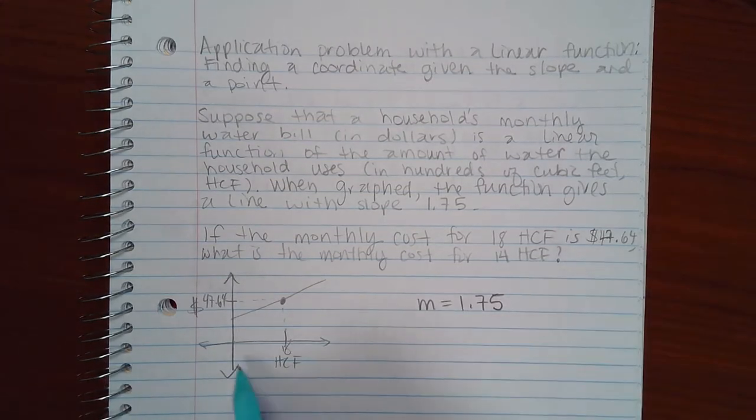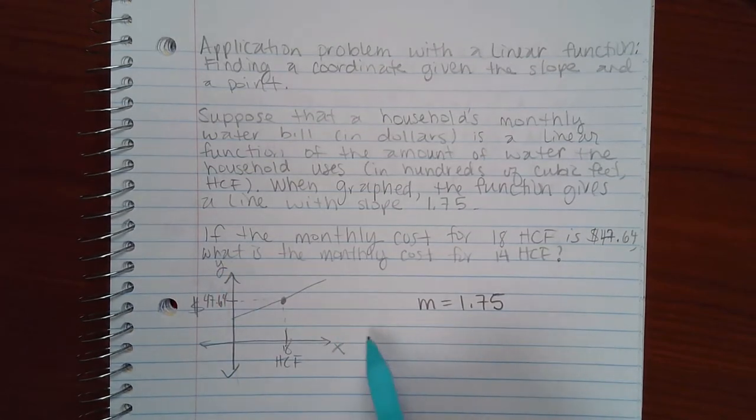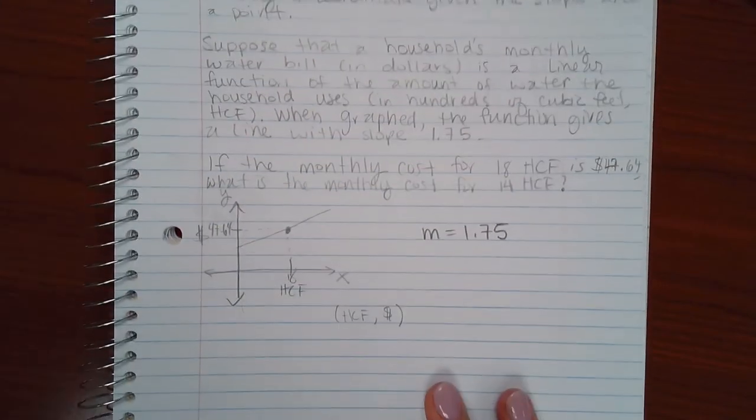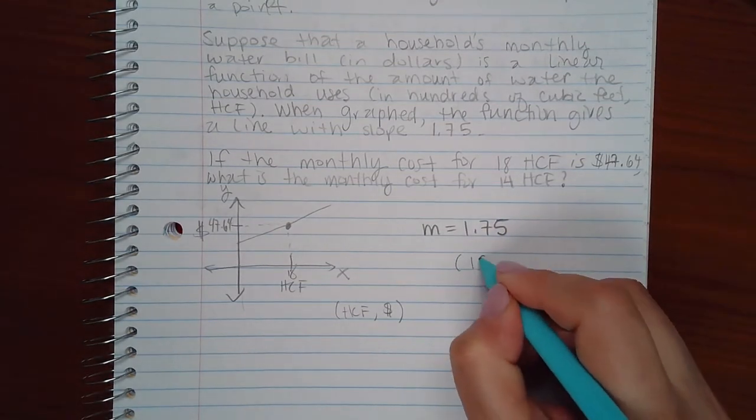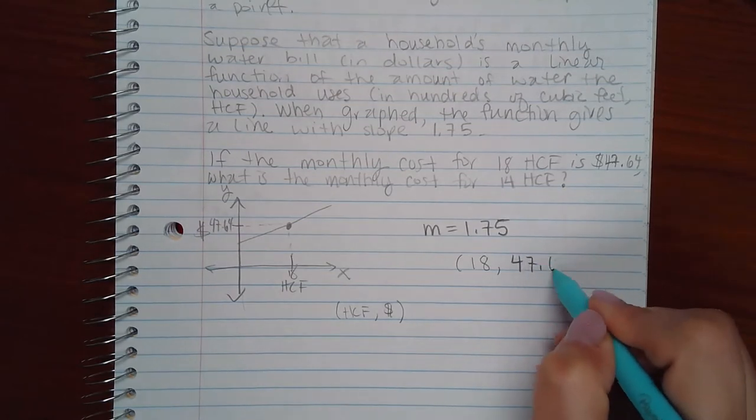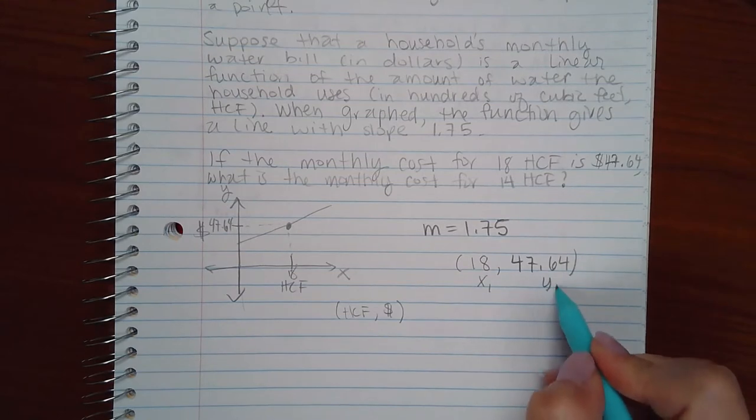So they've given me, remember, these are like my X values and these are like my Y values. So my X values are in HCFs and my Y values are in money. So if I'm going to use this information they gave me, it's going to be 18, the HCFs first, and then the money, the 47.64. So this is my X one and this is my Y one.